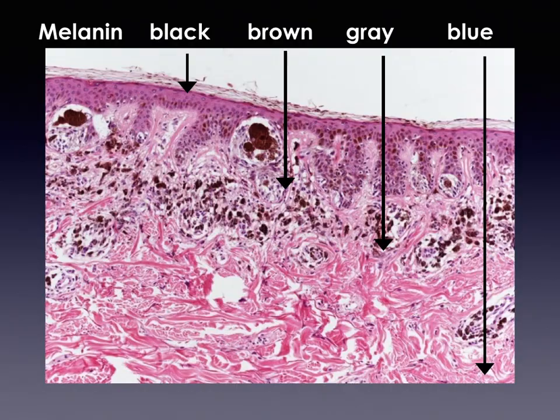Colors depend on the presence of melanin at different levels of the skin. Black corresponds to melanin in the stratum corneum, brown corresponds to melanin along the epidermal-dermal junction, gray corresponds to melanin in the upper dermis, and blue corresponds to melanin in the deeper dermis. Color is therefore an important feature to analyze, and there are different rules based on colors that we will discuss.